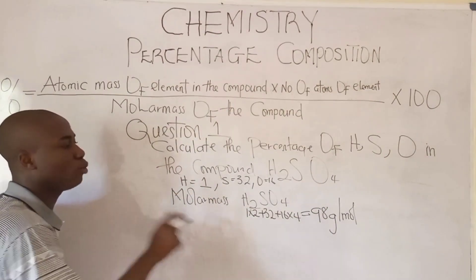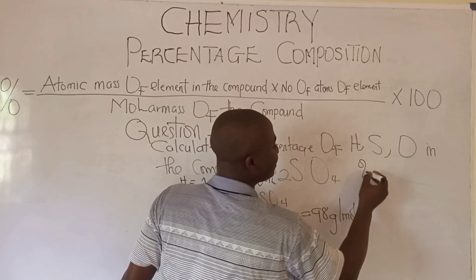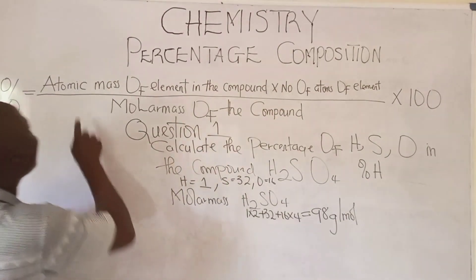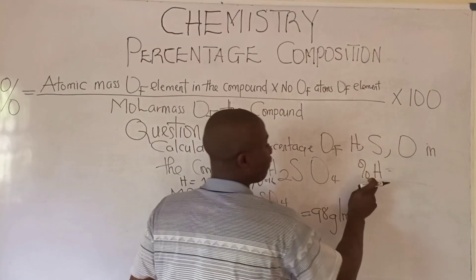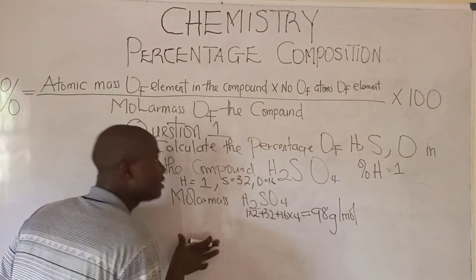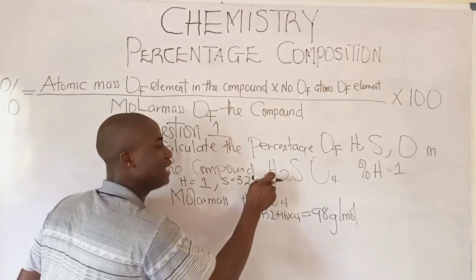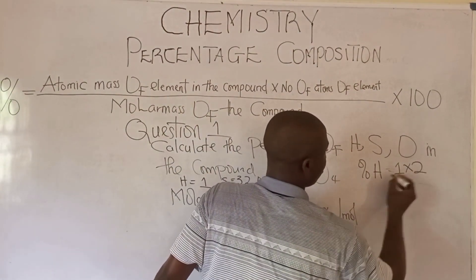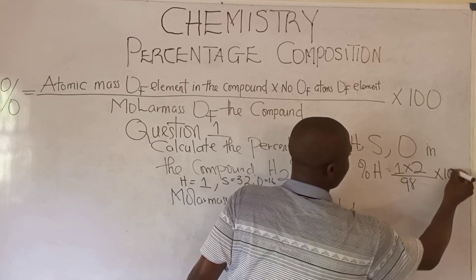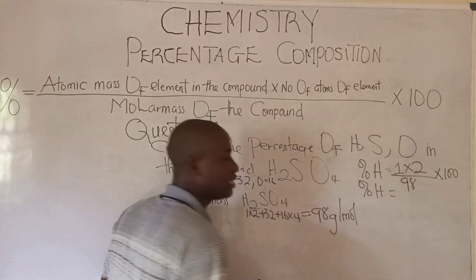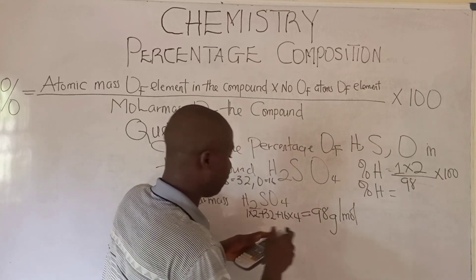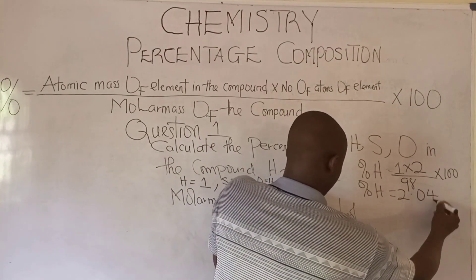Let's go ahead and calculate the percentage composition of hydrogen. Percentage composition of hydrogen: the atomic mass of hydrogen is 1, times the number of atoms of hydrogen in the compound which is 2, over the molar mass of the compound which is 98 grams per mole, times 100. That gives us: 1 times 2, over 98, times 100. The percentage composition of hydrogen becomes 2.041%.